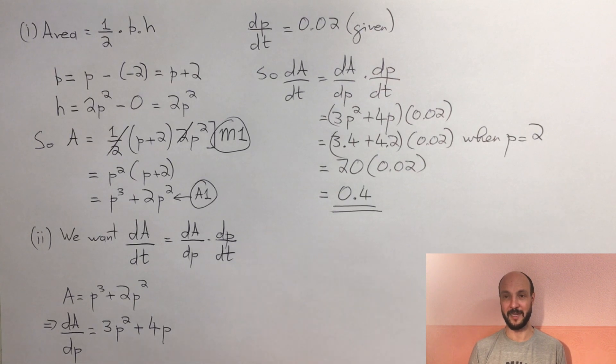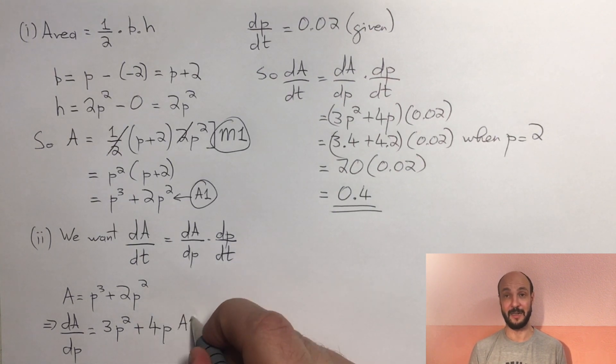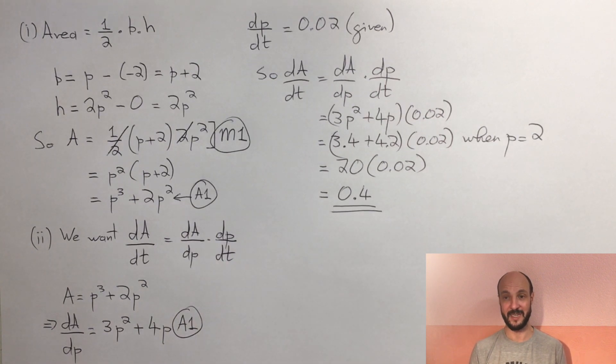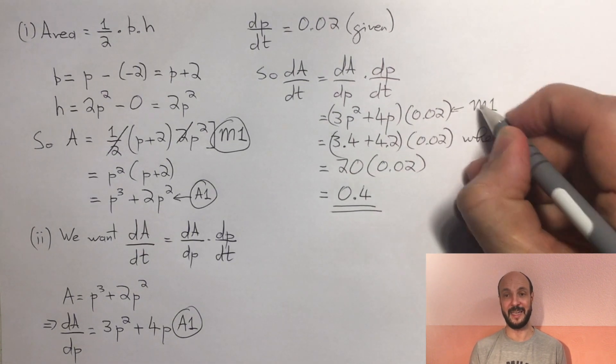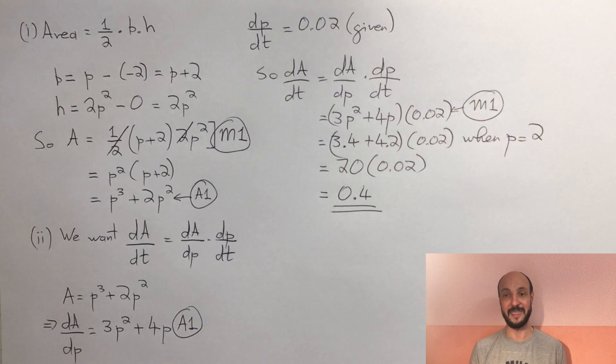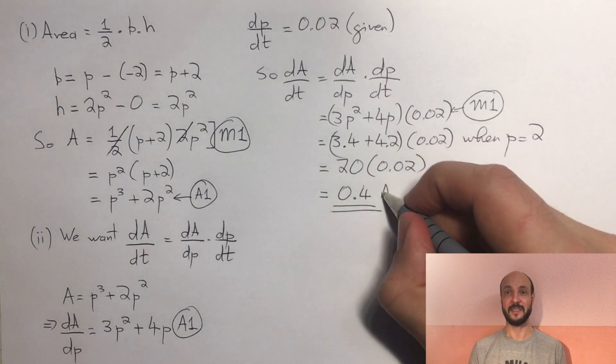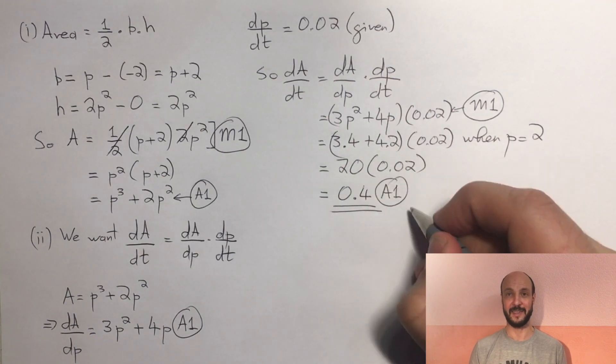And then there are three marks on the second part of the question. You've got the first mark for correctly differentiating and finding dA dp, which was 3p squared plus 4p. That was an accuracy mark. The second was a method mark for noting to use the chain rule, noting that dA dT can be written as dA dP times dP dT. And then a third and final accuracy mark for getting 0.4 as the final correct answer.